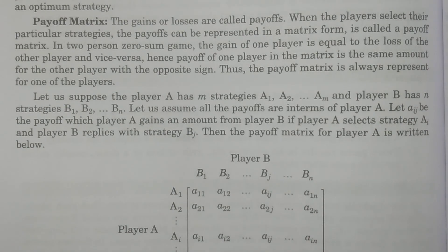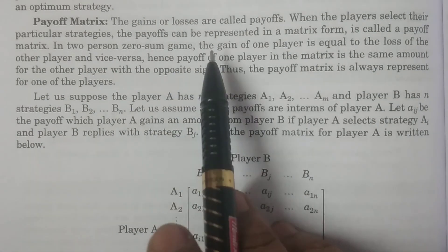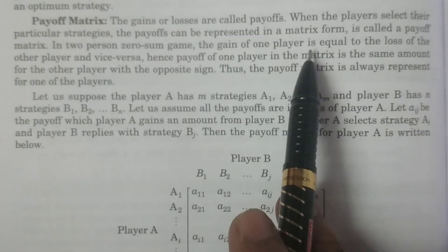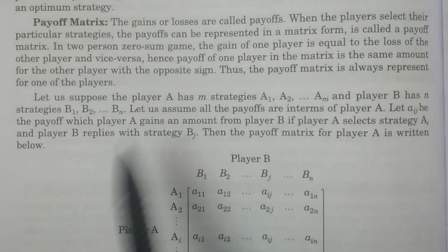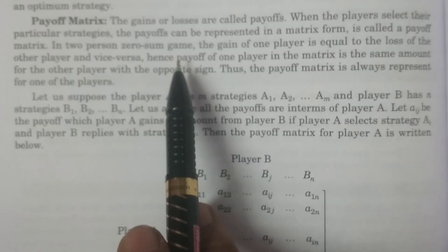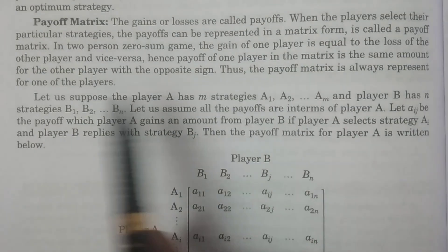Whichever strategy is selected by a particular player, that can be represented in a matrix form, which is called payoff matrix. So generally, in a two-person zero-sum game, the gain of one player is equal to the loss of the other player.